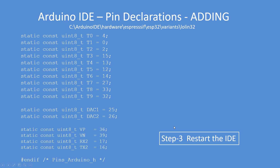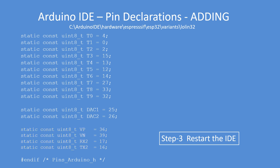Now I want to add VP and VN, so I've added those in, and also Serial2 RX2 and TX2, giving them the correct pin numbers. Press save to save that file, then restart the IDE, because this file is only read when the IDE starts. So it's no good making an amendment with the IDE already running - it won't take effect.